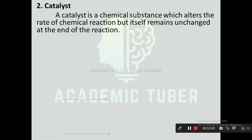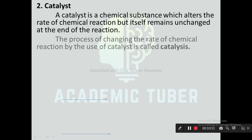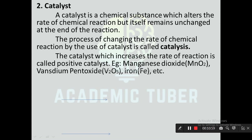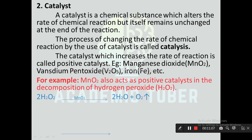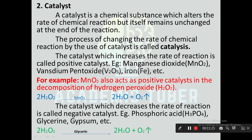Next one is catalyst. A catalyst is a chemical substance which alters the rate of chemical reaction but itself remains unchanged at the end of the reaction. The process of changing the rate of chemical reaction by using a catalyst is known as catalysis. The catalyst which increases the rate of reaction is called positive catalyst — for example, manganese dioxide, vanadium pentoxide, iron, etc. Example: 2H₂O₂ (MnO₂) → 2H₂O + O₂. The catalyst which decreases the rate of reaction is called negative catalyst — for example, phosphoric acid, glycerin, gypsum, etc. 2H₂O₂ (glycerin) → 2H₂O + O₂.